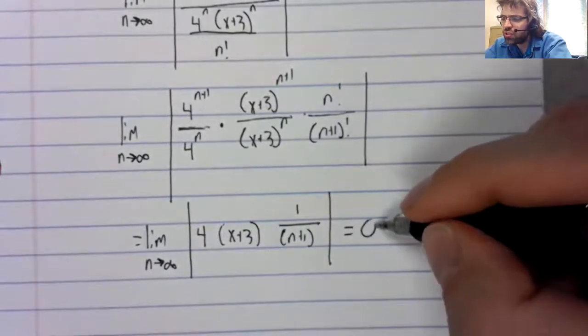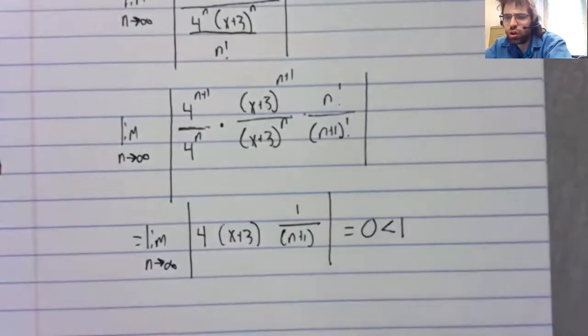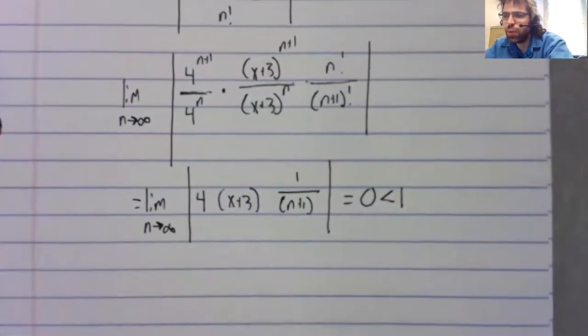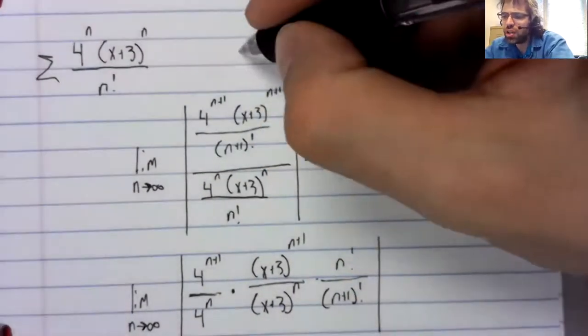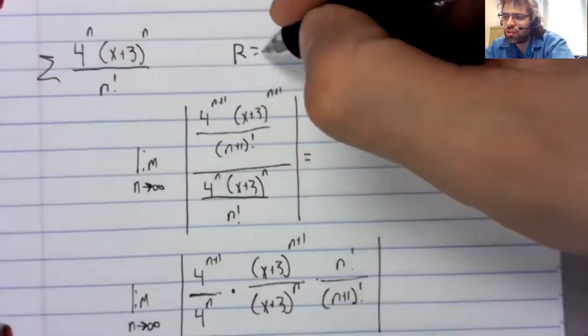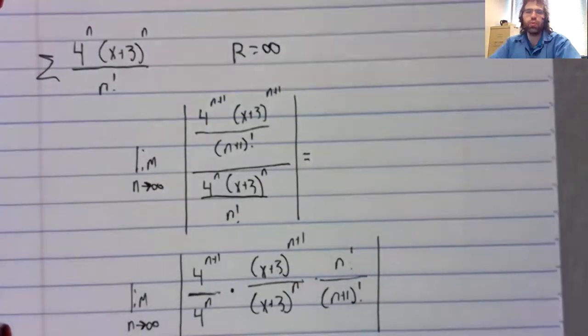This limit is zero. It's always less than one. So this always converges. R equals infinity.